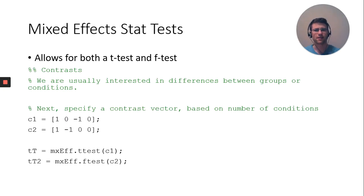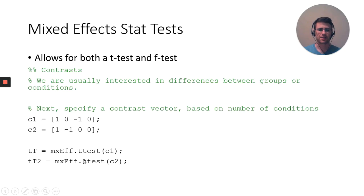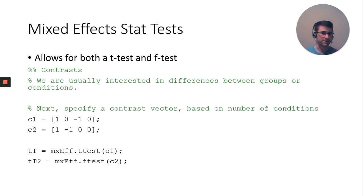Here I'm looking at the first column, stem channel 15 control group, contrasting against the third column, stem channel 1 control group. So I'm looking at the control group, the difference between conditions. In the second one, I'm looking at the control group for stem channel 15 and the pathology group for stem channel 15. Now you're looking at the same condition between groups.